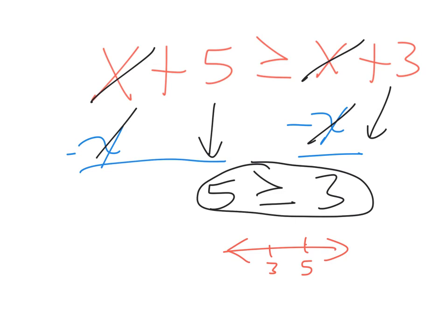Now, you might hear me say, when is this true? Well, it's true all the time. Therefore, because it's true all the time and 5 is greater than or equal to 3, you can say that this has infinite solutions. What does that mean? That means it doesn't matter what number you choose. Whatever number you pick is going to make that inequality true.